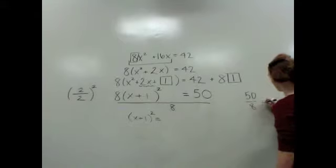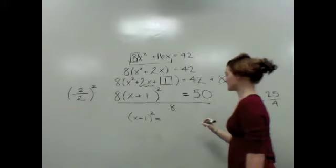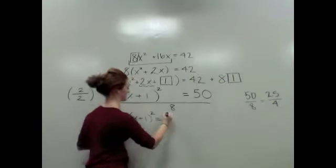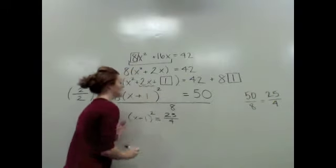So let's see if we can simplify this fraction. I'm noticing that they are both actually even numbers, so I know that I can cut them in half and divide by 2. 8 divided by 2 is 4. 50 divided by 2 is 25. Can't go any further. So I have the quantity (x + 1)² is equal to 25/4.